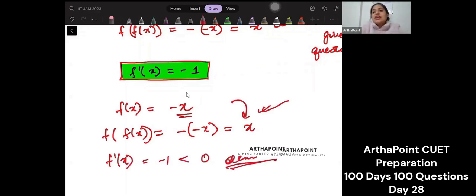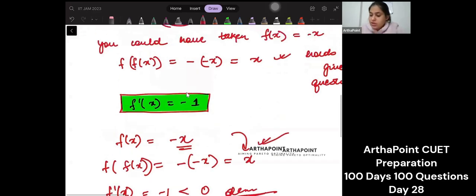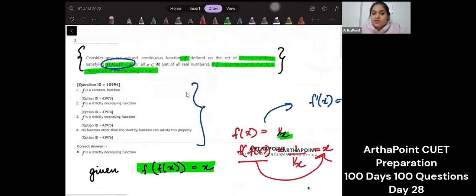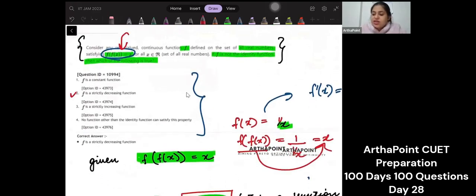So we see that when we take a function such that f of f of x is equal to x, we see that it is a strictly decreasing function, that the derivative of it is negative. But to make these functions, you need practice. You have to do these questions again.